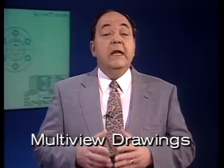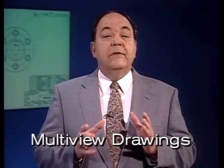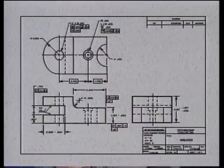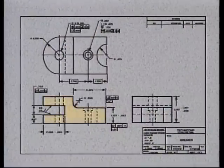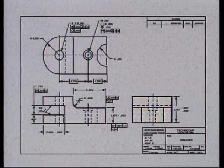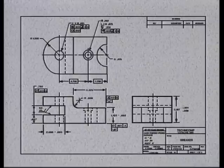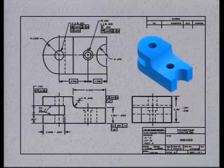Most of the drawings used in manufacturing are multi-view drawings, meaning they represent the shape of an object in two or more views. For example, this detailed drawing contains three views of the part: the front, top, and right side. This unit will show you how to interpret a multi-view drawing and visualize the part it represents.